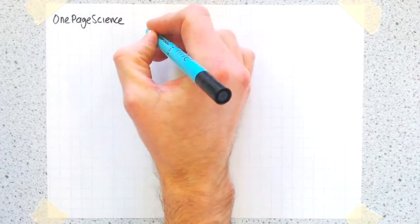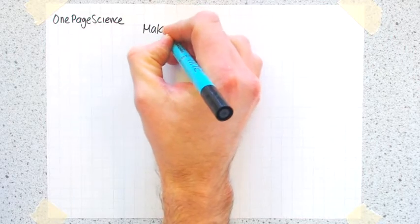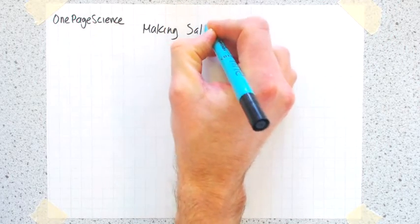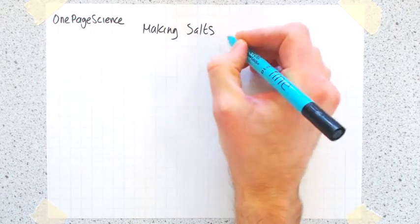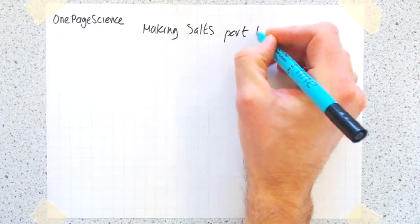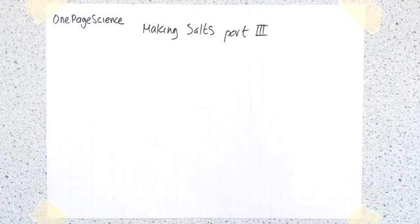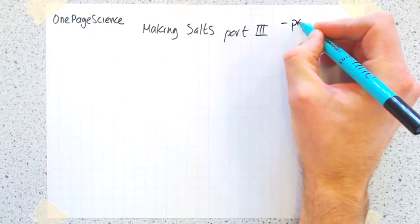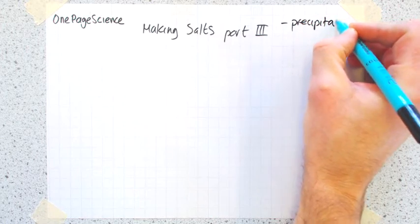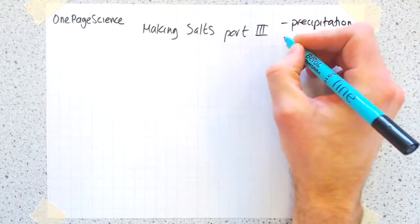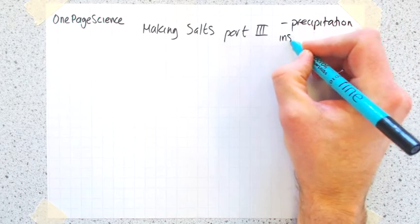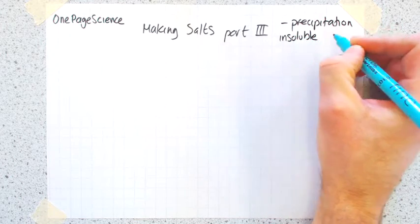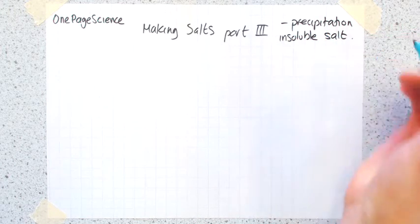This is part three of my making salts series. We're going to do something called precipitation, and we do this if we have an insoluble salt.